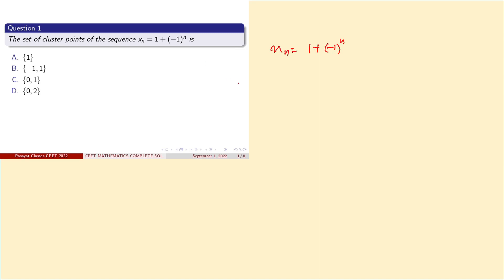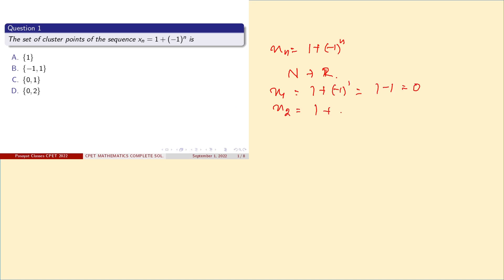We are given this sequence. A sequence is a function from the set of natural numbers to the real numbers. So let us put values: X1 = 1 + (-1)^1 = 1 - 1 = 0. Next, X2 = 1 + (-1)^2 = 1 + 1 = 2. Then X3 = 1 + (-1)^3 = 1 - 1 = 0. And X4 = 1 + (-1)^4 = 1 + 1 = 2.